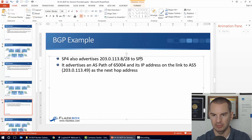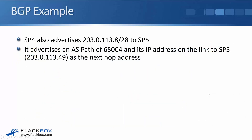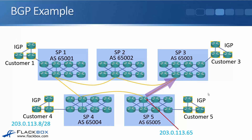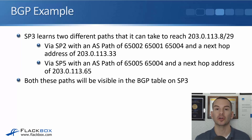SP5 is AS65005. SP4 advertises the route to SP5 with AS path 65004 and next hop 203.0.113.49. SP5 puts that in its routing table and passes the information on to SP3. The IP address connecting SP5 to SP3 is 203.0.113.65.